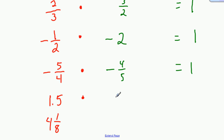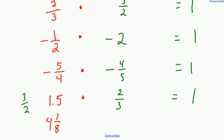What about a decimal? If I have 1.5, I could change that to its fraction form. The reciprocal of 3 halves is 2 thirds, so the reciprocal of 1.5 is 2 thirds — that equals 1. For 4 and 1 eighth: that's 33 eighths, so the reciprocal of 4 and 1 eighth would be 8 thirty-thirds. We don't want to say 1 over 4 and 1 eighth.